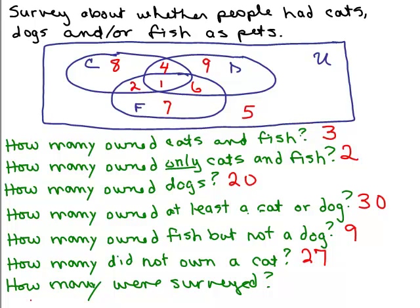The last question — how many were surveyed? You simply add all eight of those numbers up. There are eight numbers total. Let's see: 10, 20, 30 — I got 42. So there were 42 in the survey.